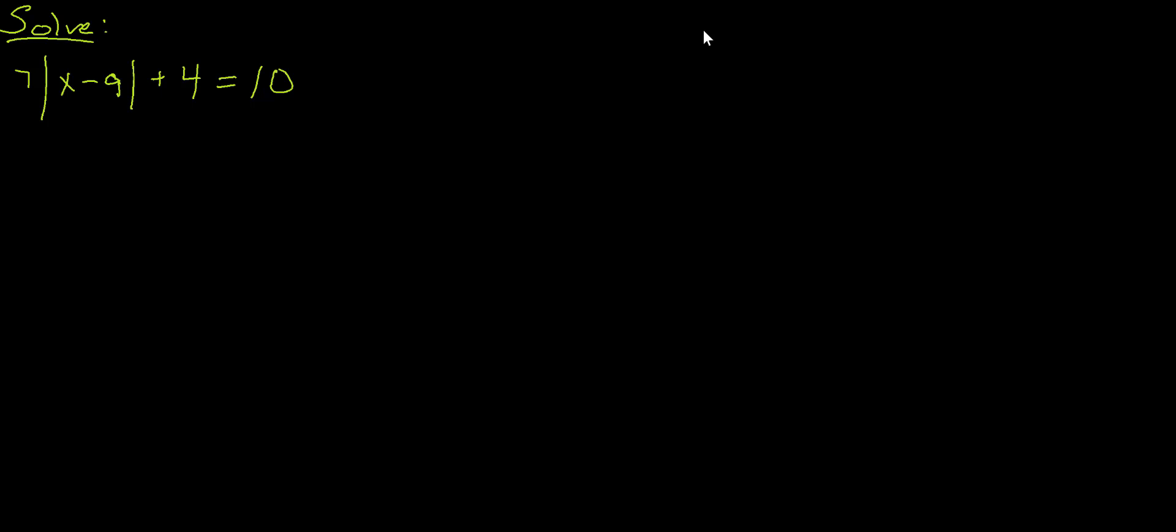Hi everyone, in this video I'd like to talk about how to solve an equation with an absolute value sign in it. So the equation we have is 7|x - 9| + 4 = 10.